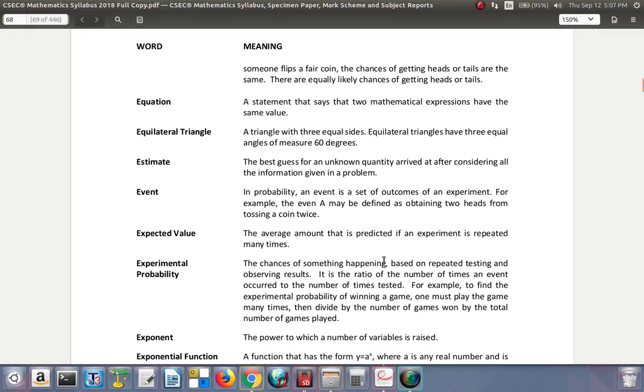Expected value: the average amount that is predicted if an experiment is repeated many times. It keeps happening over and over, so you expect that the next time it will occur.